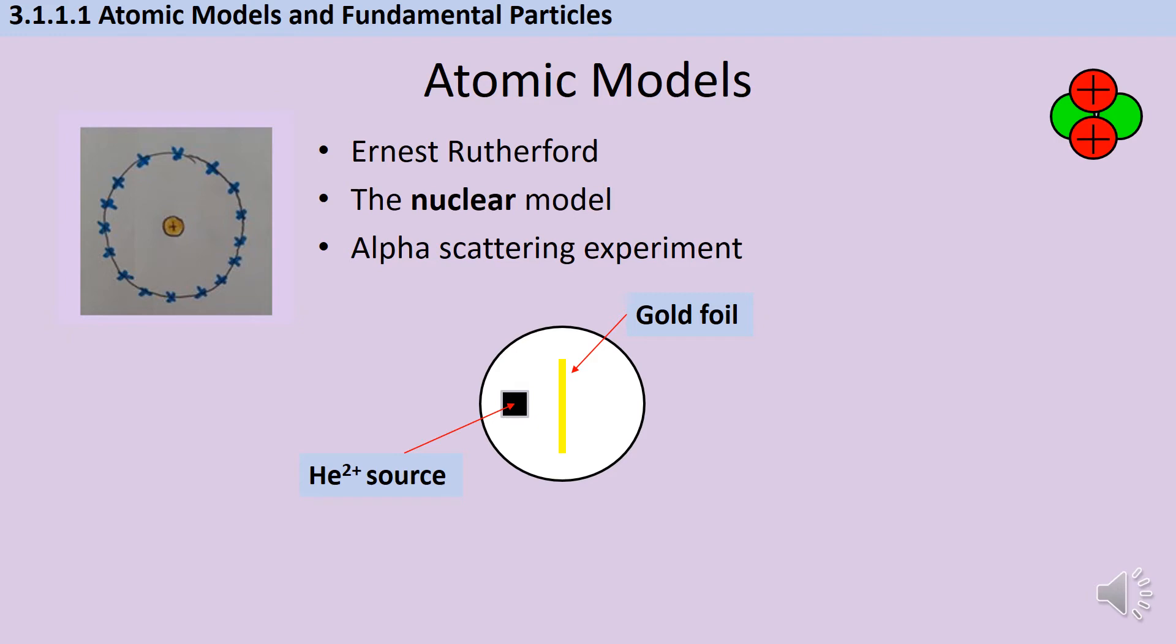The first observation was that the vast, vast majority of the alpha particles did go straight through. And from this they concluded that actually what was happening was that the vast majority of the atom was empty space. The second observation they made was that some of them were deflected back in what we call backscattering. And some of these were deflected slightly to the side, and some of them, a very, very small number, bounced straight back at them.